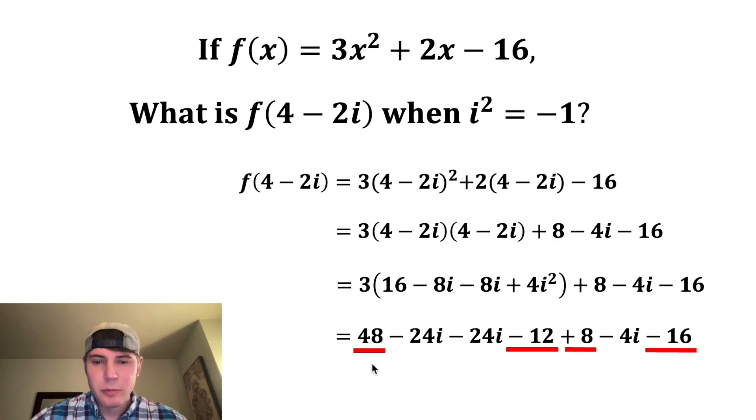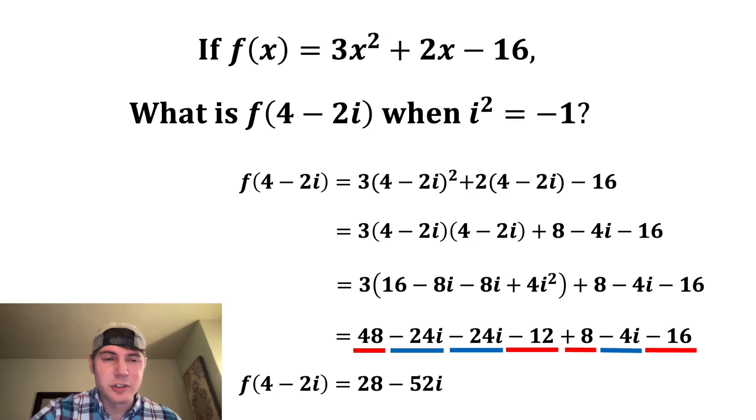And now we just need to combine like terms. We have 4 terms that are real numbers, so we'll combine those as 28. And then we have 3 imaginary terms is -52i. And that is the answer to the question. F of 4 - 2i is equal to 28 - 52i. How exciting.